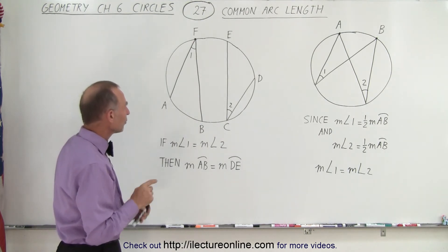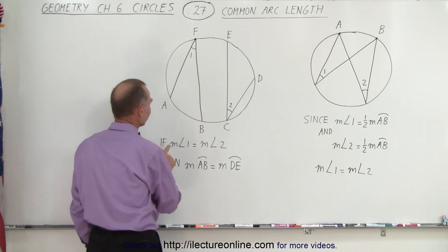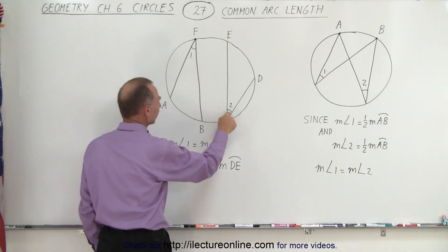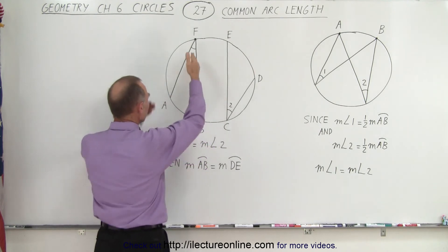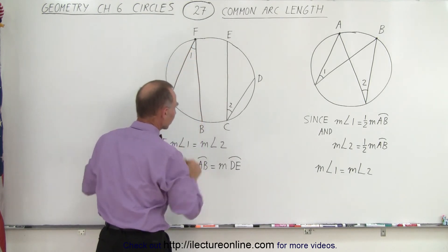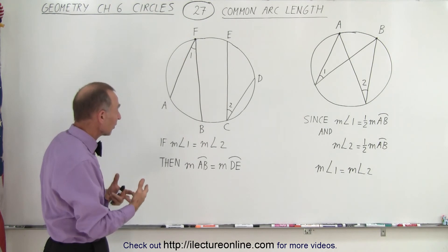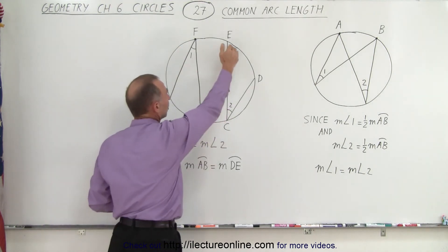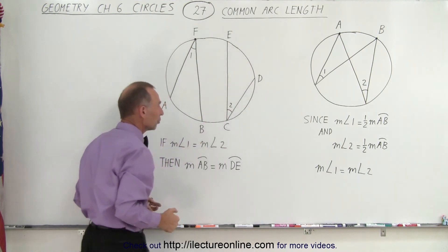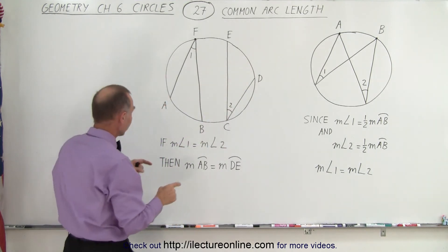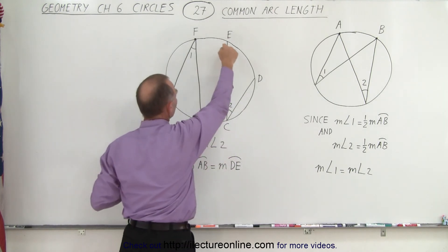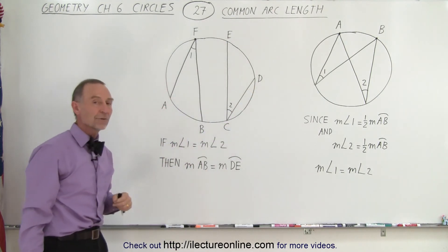And likewise, notice that if the measure for angle 1 here is equal to the measure of angle 2 there, then where the two lines cross on the other side of the circle, that must subtend an arc length of half the measure of angle 1. In this case, this should then subtend half the measure of angle 2. But of course, if they both have the same measure, then the arc length from A to B must equal the arc length from D to E.